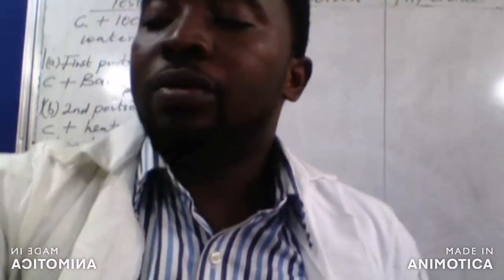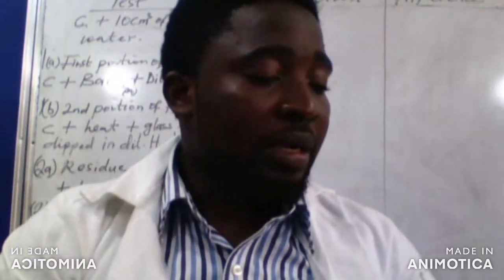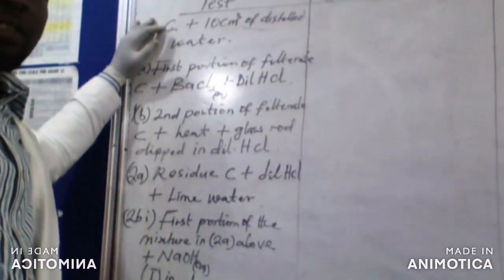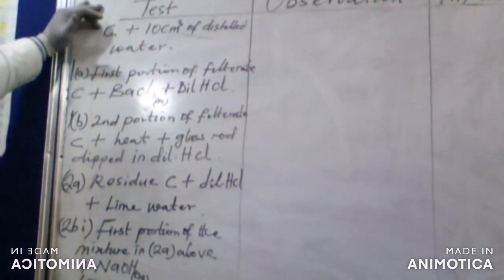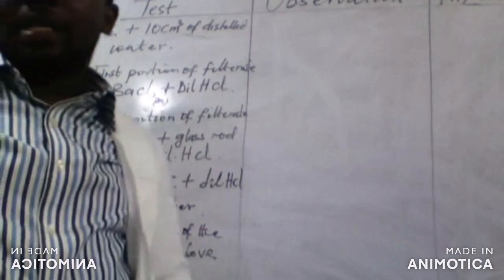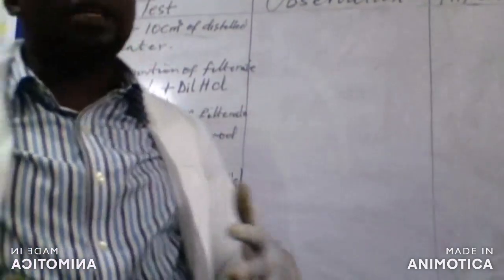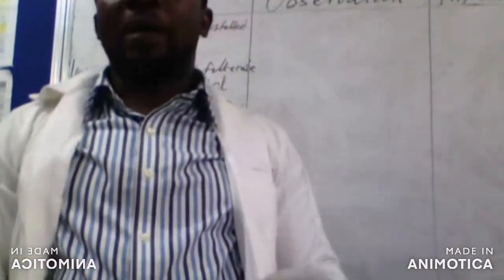Without wasting much of your time, let us go to the observation table and carry out the instructions given. The first instruction says we should dissolve C in 10 cm³ of distilled water. Before I dissolve C, I need to produce that salt mixture, which is gotten by adding ammonium carbonate and copper sulfate.